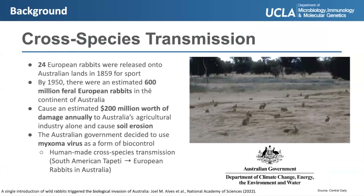To give context as to why and how this cross-species transmission occurred: European rabbits exist in Australia because someone from England released 24 of them onto Australian lands for sport, and they reproduced until they became an invasive species. By 1950, there were an estimated 600 million feral European rabbits on the continent, and they caused $200 million worth of damage to Australia's agricultural industry annually, on top of causing severe soil erosion.